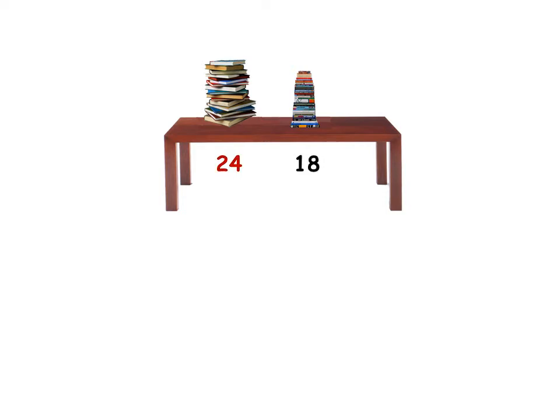And I ask you what is the total number of books on the table? What will you do? You will add 24 plus 18 and when you add 24 plus 18 you will get 42. So I can say that there are 42 books on the table altogether.